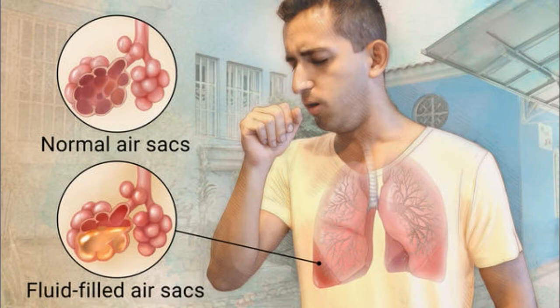Pneumonia can be caused by viruses, bacteria, or fungi. Pneumonia can be prevented by immunization, adequate nutrition, and by addressing environmental factors.